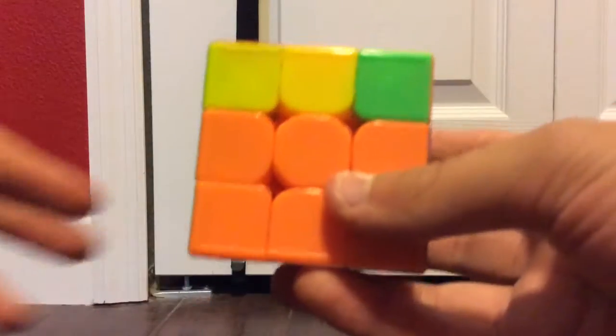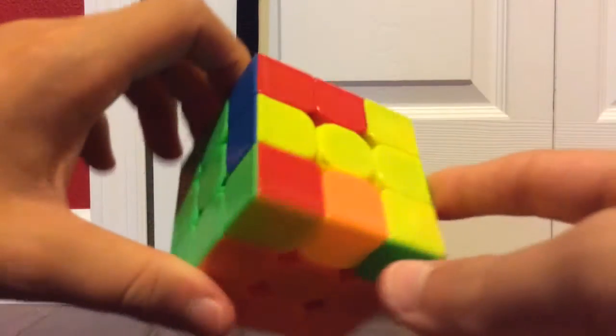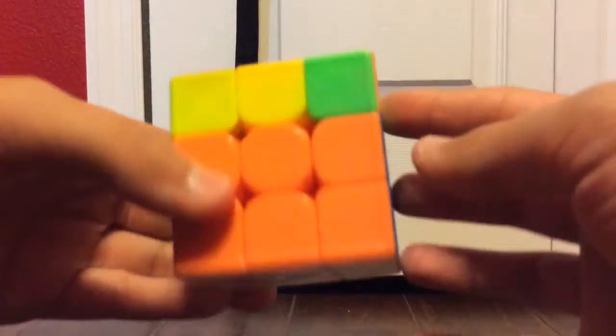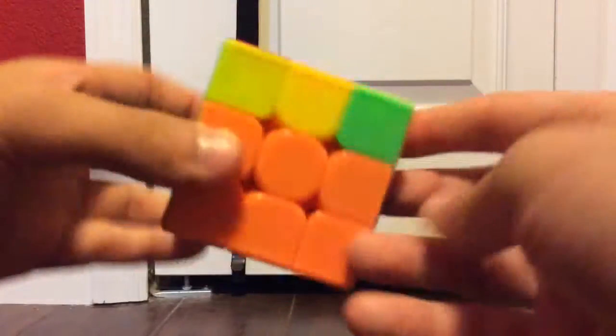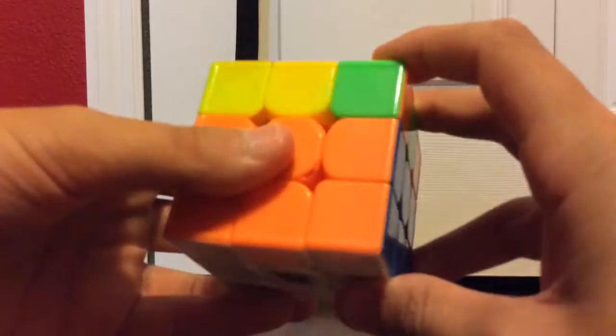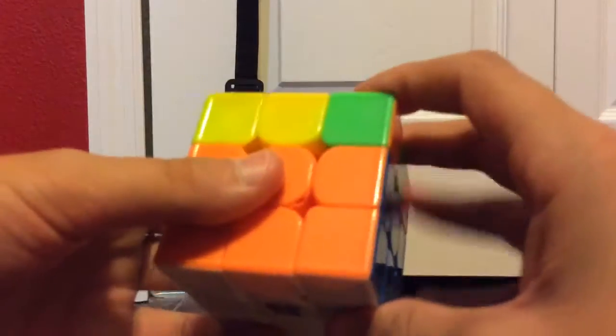So for the third and final case, I actually realized I have a, I think it's called a T perm, I don't know. I know this OLL case just in general, so I'd actually do this instead of a normal bar algorithm.